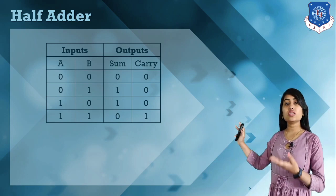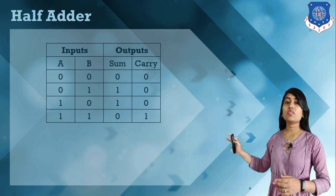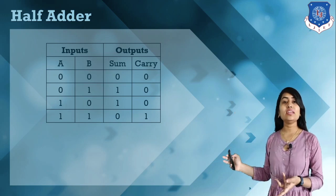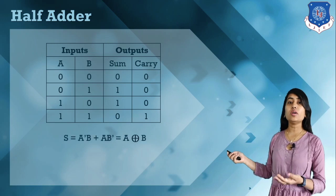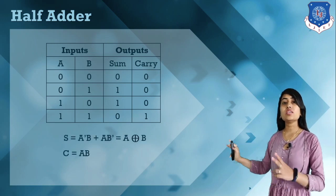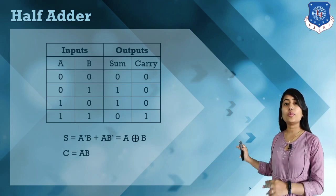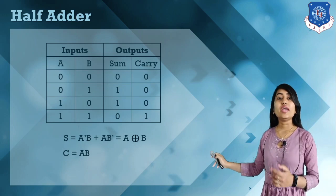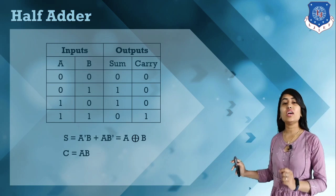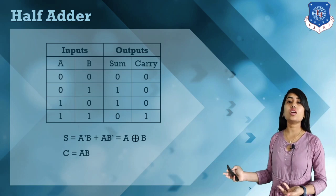Using this truth table we can calculate equations for sum and carry, and then design the half adder. The sum equation is A'B + AB', which is basically an XOR operation, so we can write it as A XOR B. For carry we have the equation A·B.